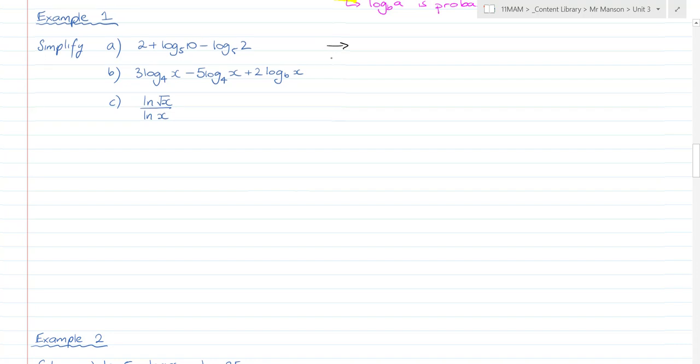Example one a is a simplification question, and it can be done using the log laws, and then it should simplify quite nicely. So, we've got 2 plus log base 5 of 10 minus log base 5 of 2. How do we simplify that? 2 plus log base 5 of 10 over 2, which is 2 plus log base 5 of 5.